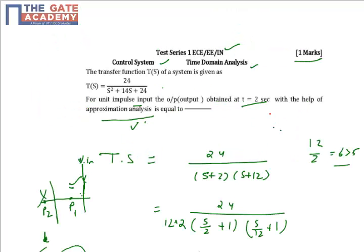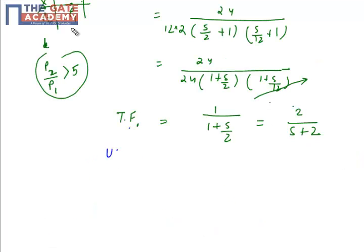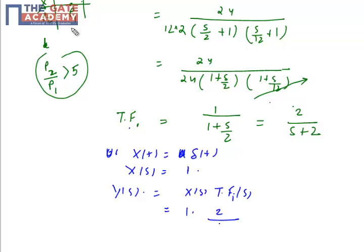Now the question says the input is unit impulse. So x(t) will be unit impulse, and X(s), the Laplace transform of unit impulse, is 1. So the output response Y(s) will be X(s) times the transfer function.